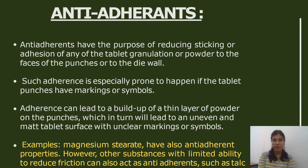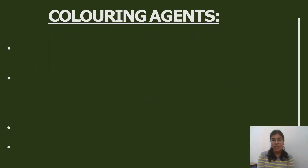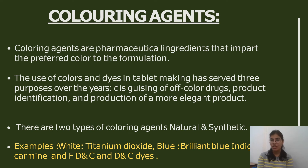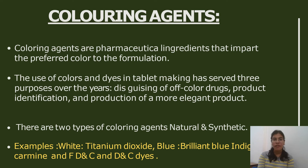The second-to-last class is coloring agents. Coloring agents impart the preferred color to the formulation. The use of colors and dyes in tablet making serves three purposes: it aids in identification of color-coded drugs, product identification, and production of a more elegant product. There are two types: natural and synthetic. Examples include titanium dioxide for white, FD&C and D&C dyes, and Brilliant Blue for blue coloring.